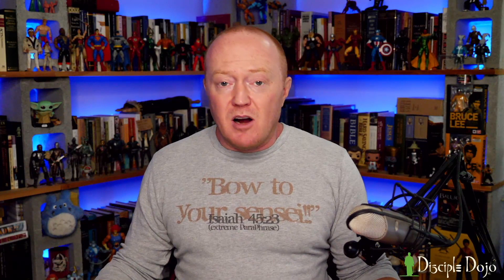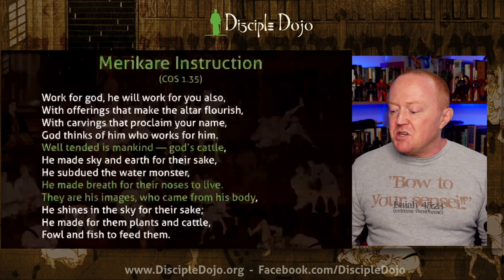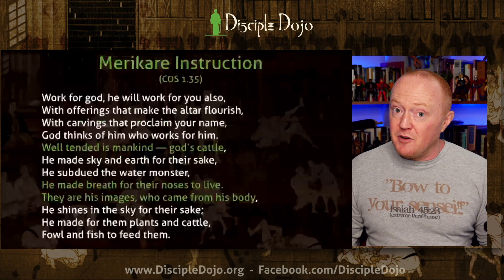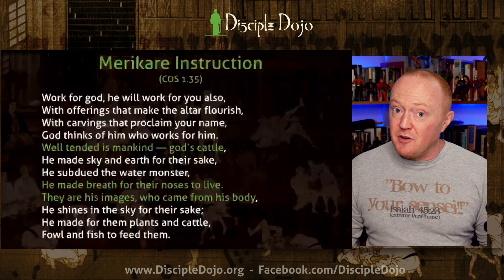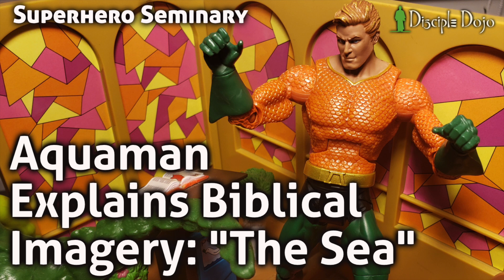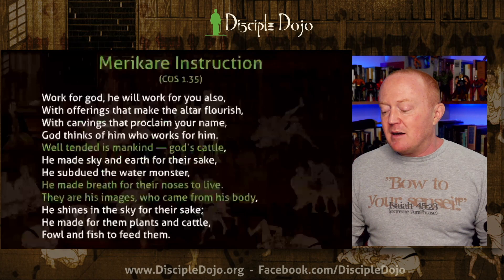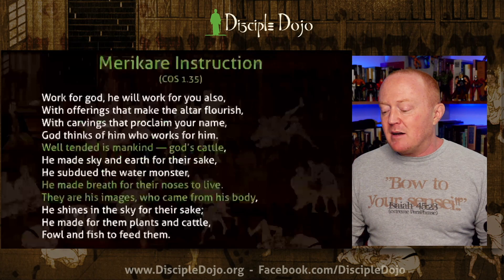Here's one more text from the ancient world — the Instruction of Merikare — instruction a pharaoh passes on to his son. He tells his son: 'Work for god, he will work for you also, with offerings that make the altar flourish, with carvings that proclaim your name. God thinks of him who works for him. Well tended is mankind, God's cattle. He made sky and earth for their sake. He made breath for their noses to live. They are his images who came from his body. He shines in the sky for their sake. He made plants and cattle, fowl and fish to feed them.'